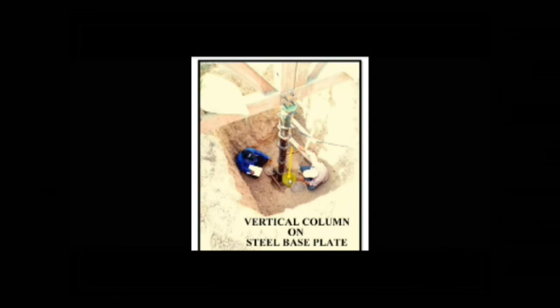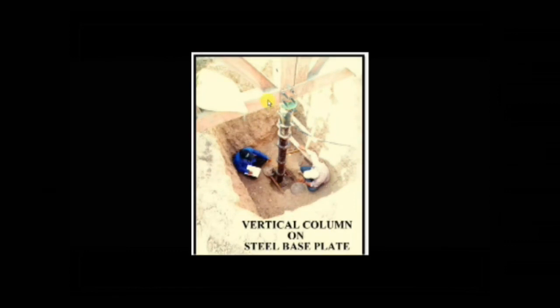When load is applied to the plate, it settles. The settlement is measured with the help of sensitive dial gauges. For a square plate, two dial gauges are used. Dial gauges are mounted on independently supported datum bars. As the plate settles, the settlement is recorded using the dial gauges. The load is indicated on the load gauge of the hydraulic jack.